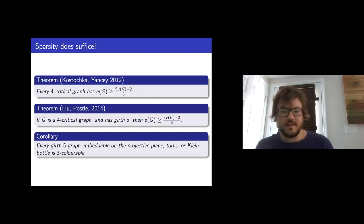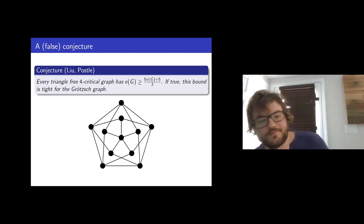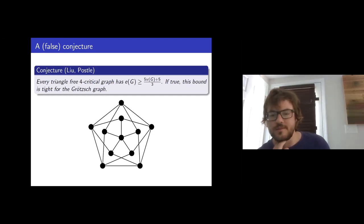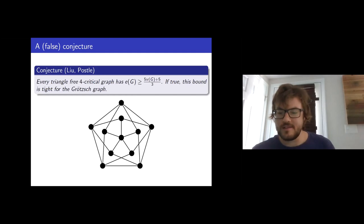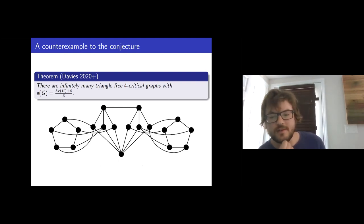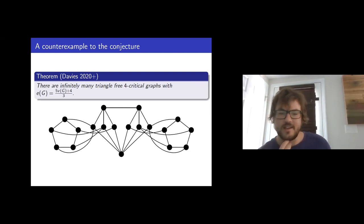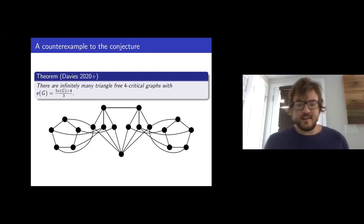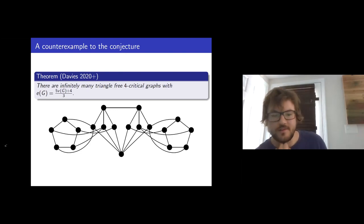Liu and Postle conjectured that girth-5 was irrelevant: every triangle-free 4-critical graph has |E| ≥ (5|V| + 5)/3, which would be best possible for the Grotzsch graph. However, as you might guess from the talk title, this is a false conjecture. James Davies proved there are infinitely many triangle-free 4-critical graphs with |E| = (5|V| + 4)/3. I drew the smallest one here — it's the most interesting one, and it's pretty easy to get infinitely many once you have one.